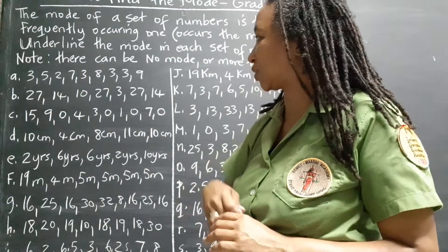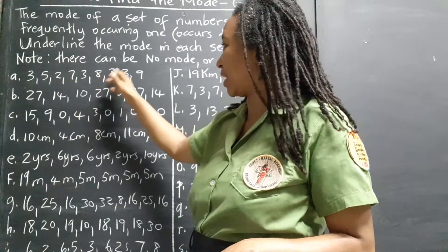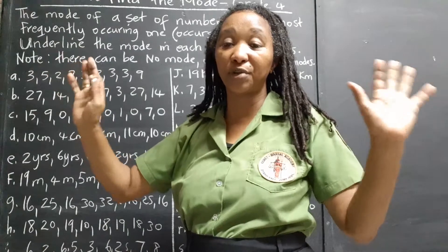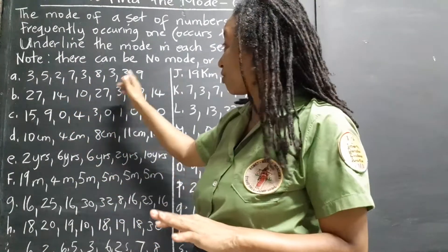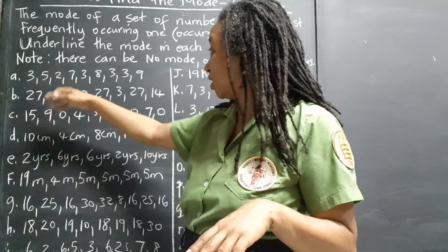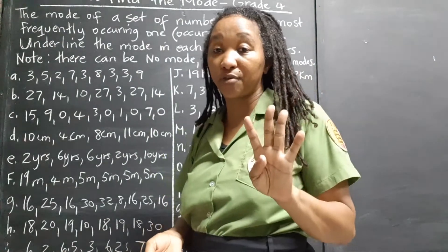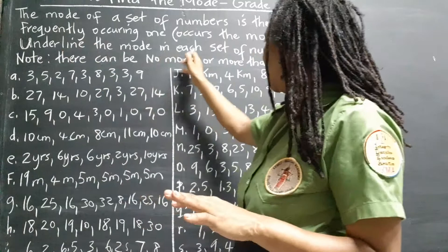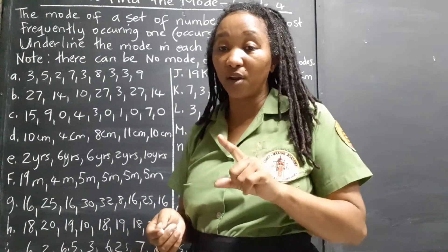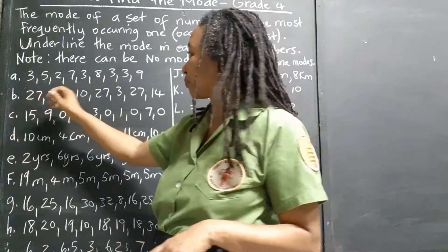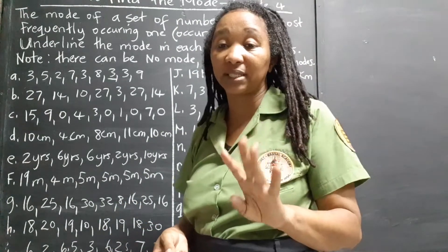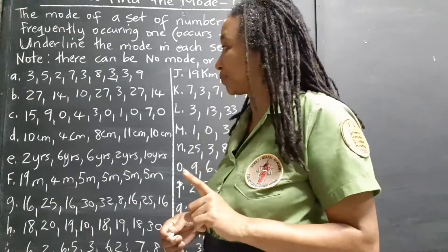Let's look at our first example, set A: 3, 5, 2, 7, 3, 8, 3, 3, 9. Which number pops out at you? The three — because there are four threes. The other numbers each appear just once: one five, one two, one seven, one eight, one nine. So three is the mode from this set. I'm going to underline it.